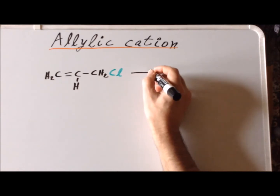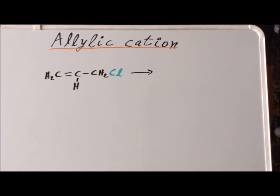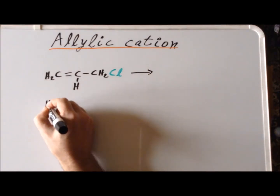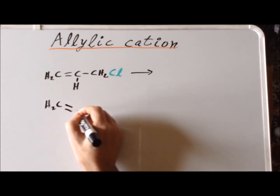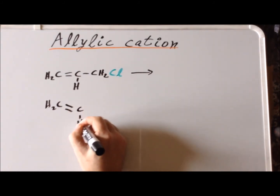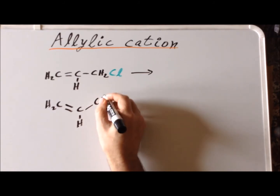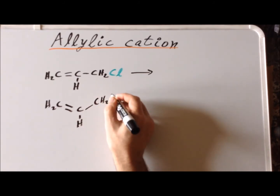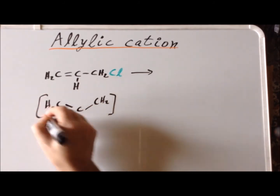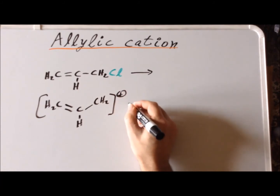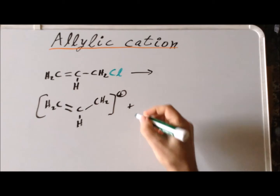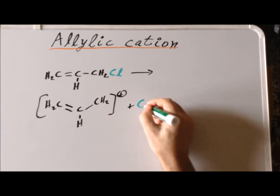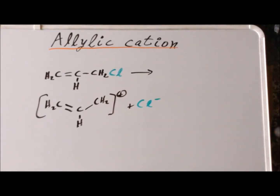We know that it's possible for it to ionize. And we get the following structures. So this is a cation with a positive charge, and as expected, we have separation of the chloride as the anion.